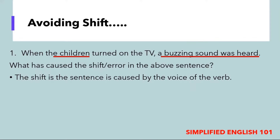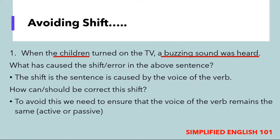To avoid this, we need to ensure that the voice of the verb remains the same. In English, the active voice is the subject doing the action and the passive voice is the receiver of the action. In this particular sentence, the children are doing the action, so throughout the entire sentence this should be clear for all actions performed. Either it is active or it is passive — we need to ensure the voice remains the same throughout. We can correct the sentence by saying: 'When the children turned on the TV, they heard a buzzing sound.'